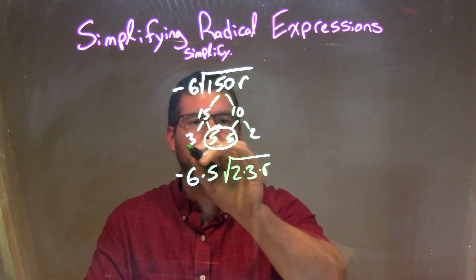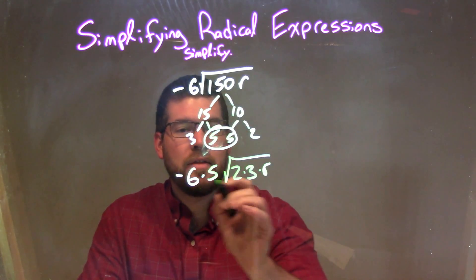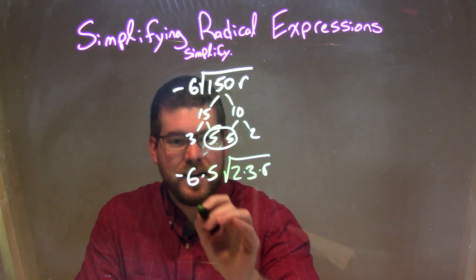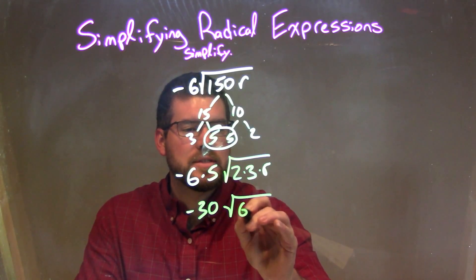So you have the 2, 3 times 2, and then the R by itself. So now, let's simplify this. 6 times 5 is 30, and it's a negative 6, so it's negative 30 times the square root of 2 times 3, which is 6R.